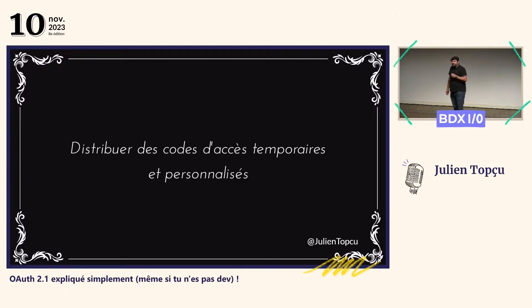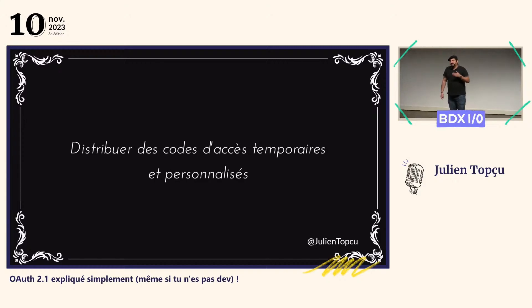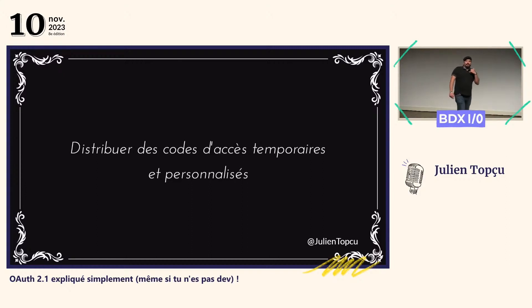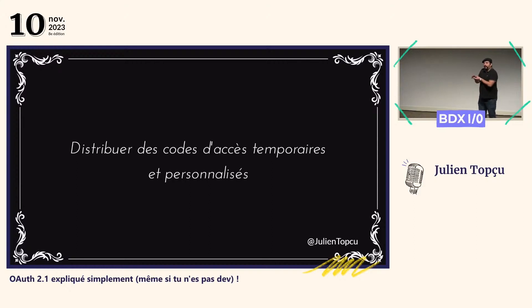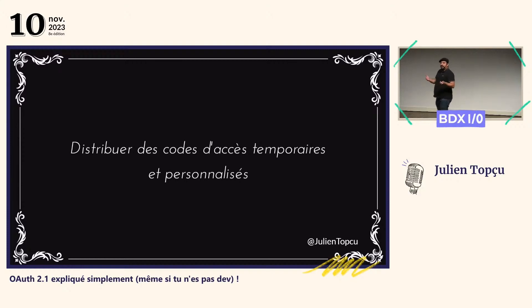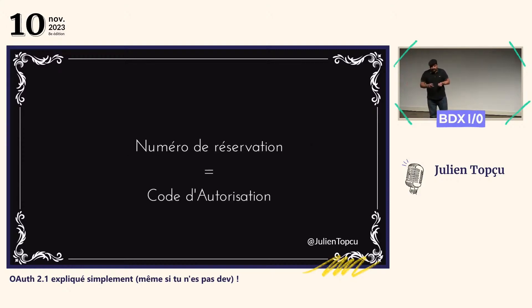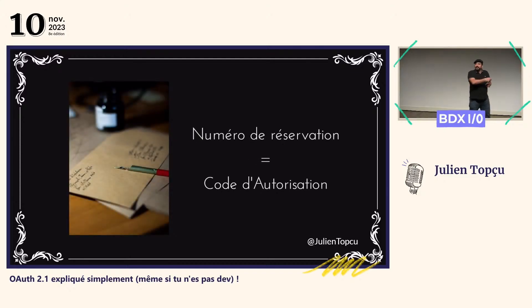On s'est demandé ce qui, dans le cas d'une réservation d'hôtel, serait à la fois temporaire et personnalisé. C'est très simple, parce que dans le process de réservation, les convives nous appellent — on est en 1932, il n'y a pas Internet — ils font une réservation, et on leur envoie un courrier qui contient le numéro de leur réservation. Ce numéro de réservation est unique, n'identifie que leur réservation, et n'a plus de sens une fois qu'ils ont rendu leur chambre. Donc ça va servir de code d'autorisation pour ouvrir cette serrure à code.